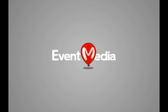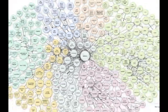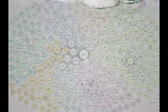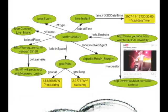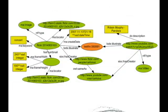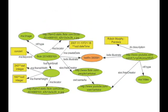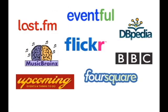Event Media is a data set in the linked data cloud that contains descriptions of events and descriptions of photos and videos illustrating those events, derived from multiple and heterogeneous sources.